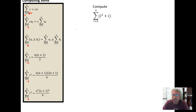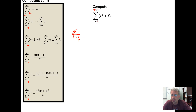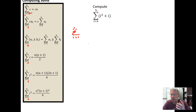I want to take this summation and instead of having it start at three, I want to start it at one. The first thing to notice is that if I'm running from three to five, the difference between the upper and lower bound is two — five minus three is two. So if I change the lower bound, I still want the distance between the upper and lower bound to be the same. Five minus three is two, so I'm going to add two to one: two plus one is three. So five minus three is two and three minus one is two — I'm running over the same number of terms.